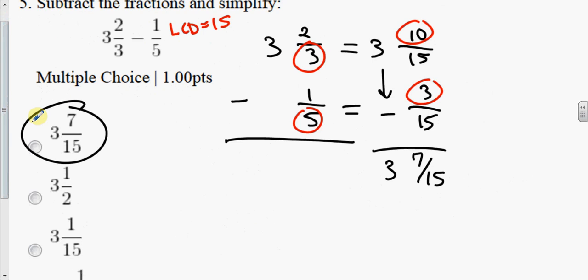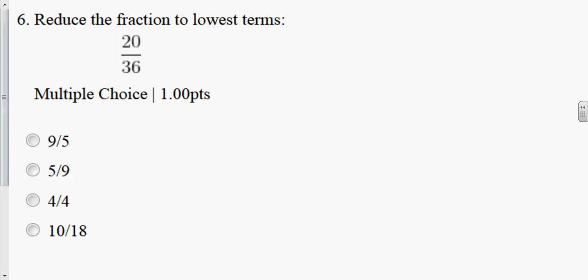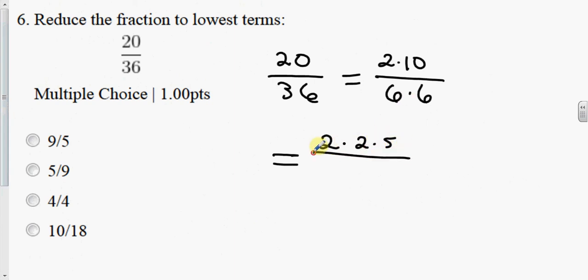So now we're going to reduce this fraction. This 20 over 36. You break the numbers down. You think about this as being 2 times 10. This is over 36 is 6 times 6. I'm going to keep breaking that down. Try to break it down to what we call prime numbers, if you will. So this is 2. That 10 becomes 2 times 5.